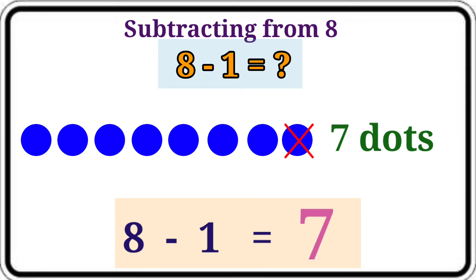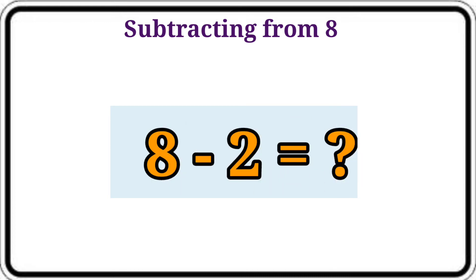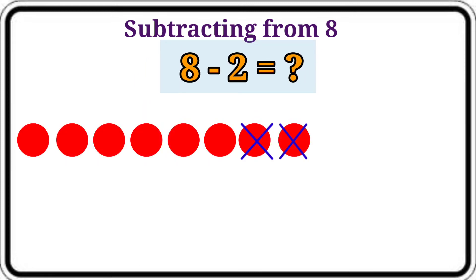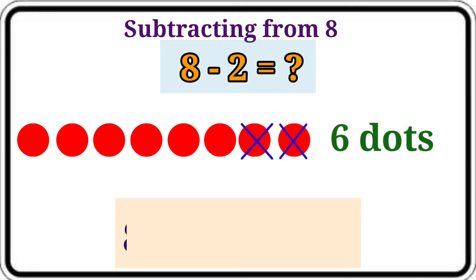Let's see the next question: 8 minus 2. Let us count the dots that are not crossed: 1, 2, 3, 4, 5, 6. Here 6 dots. Let's write them. 8 minus 2 is equal to 6.